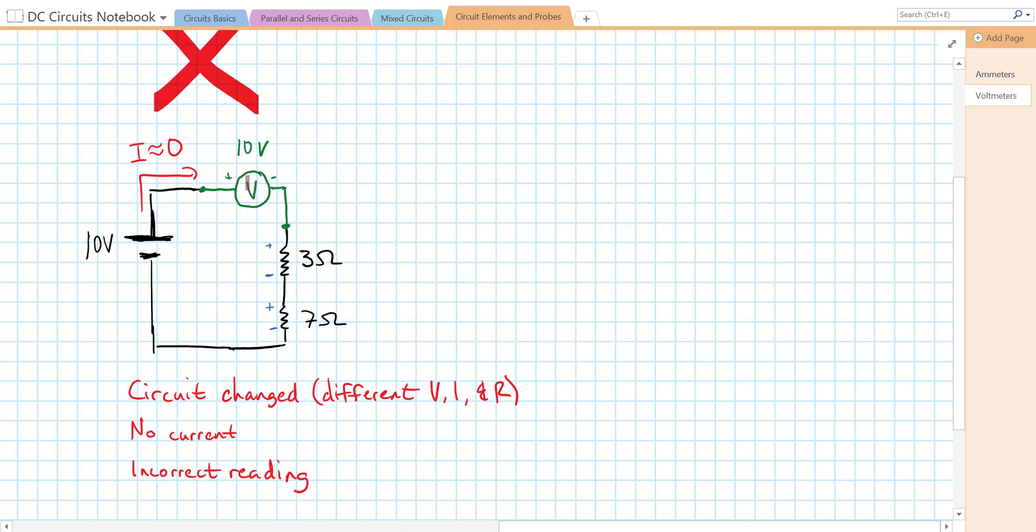Either way, this doesn't really make sense because when we take potential difference, we measure across from two points. So if we want to measure the potential difference of this 3 ohm resistor, we've got to measure across that 3 ohm resistor.